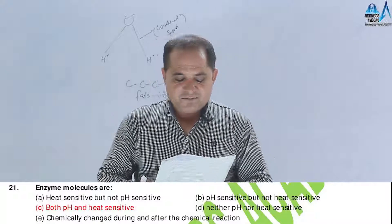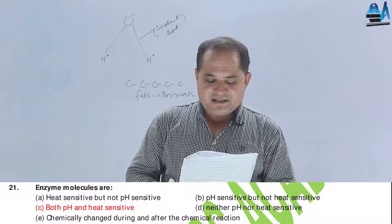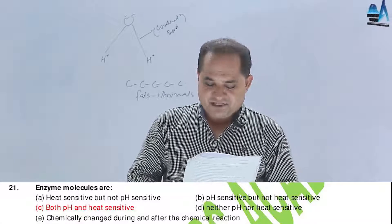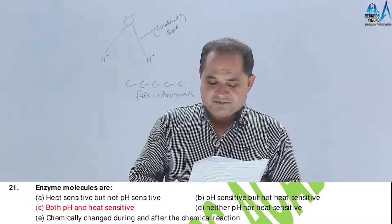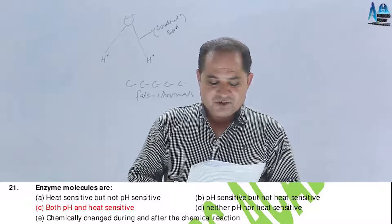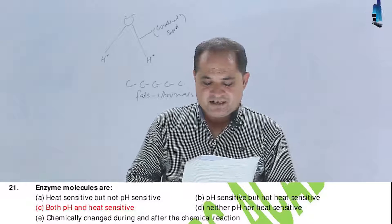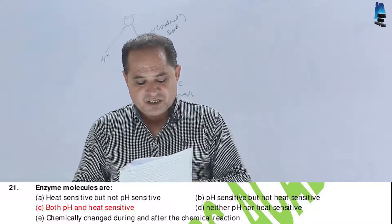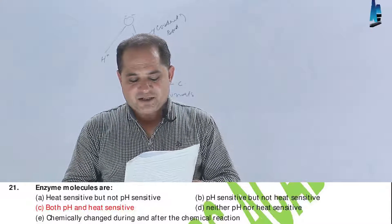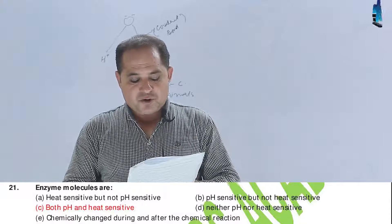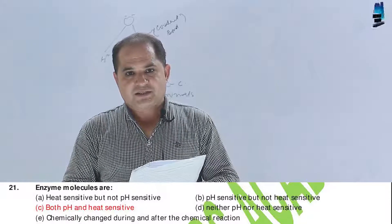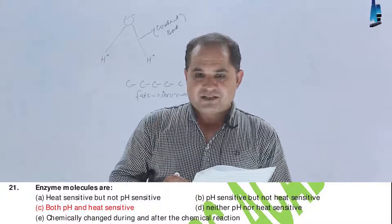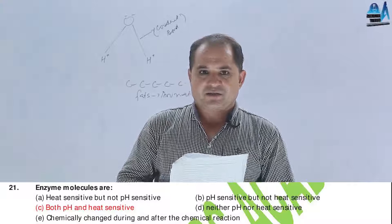Question number 21. Enzyme molecules are: A, heat sensitive but not pH sensitive; B, pH sensitive but not heat sensitive; C, both pH and heat sensitive; D, neither pH nor heat sensitive; E, chemically changed during and after chemical reaction. The correct answer is C — both pH and heat sensitive, as discussed in the characteristics of enzymes.